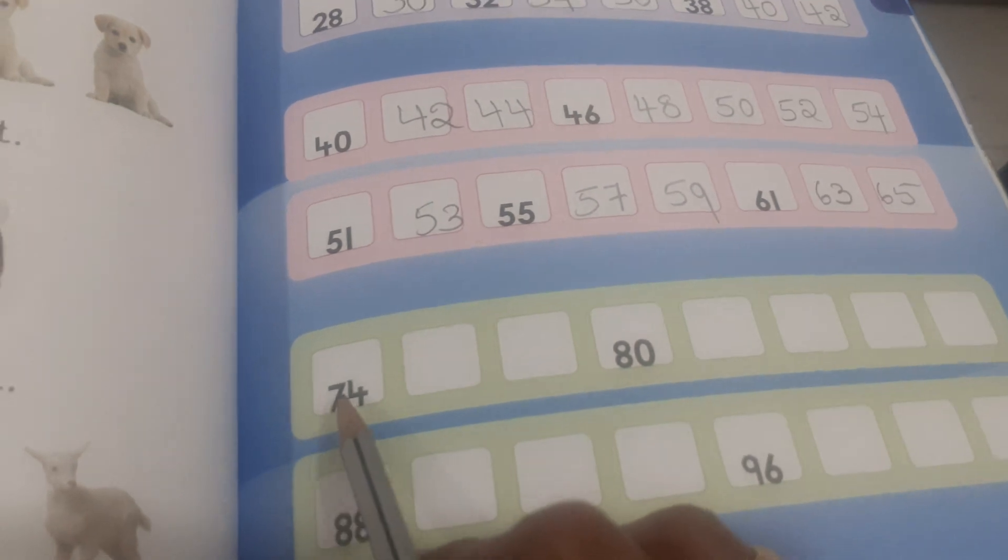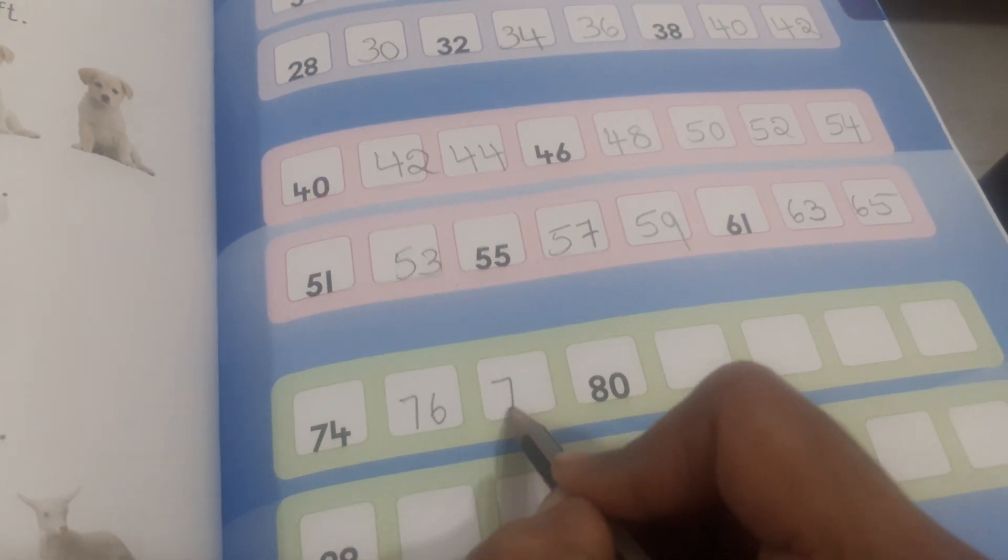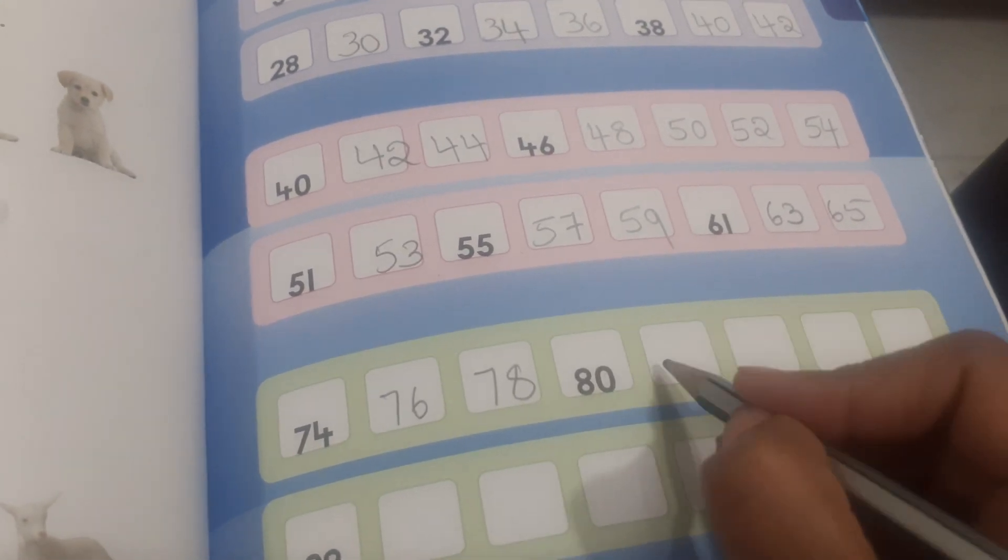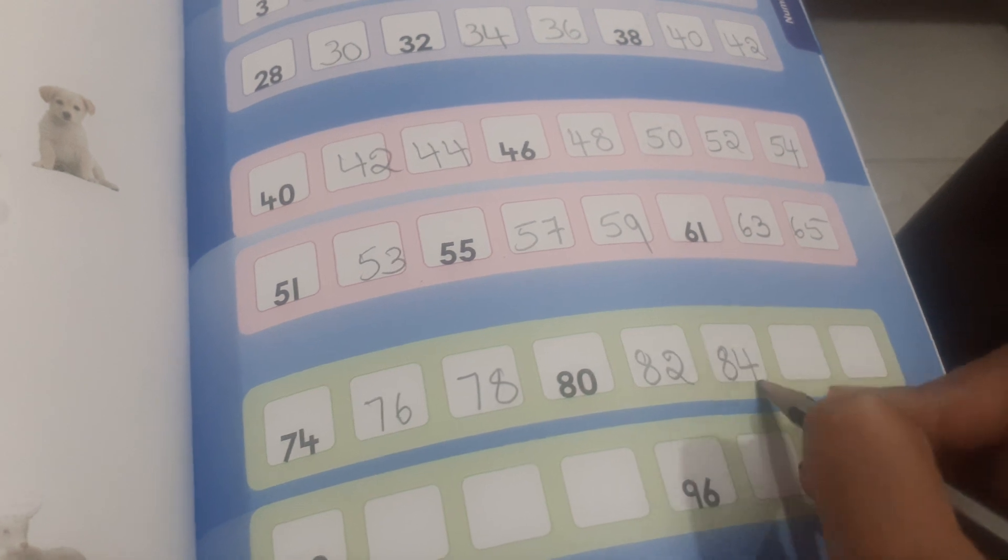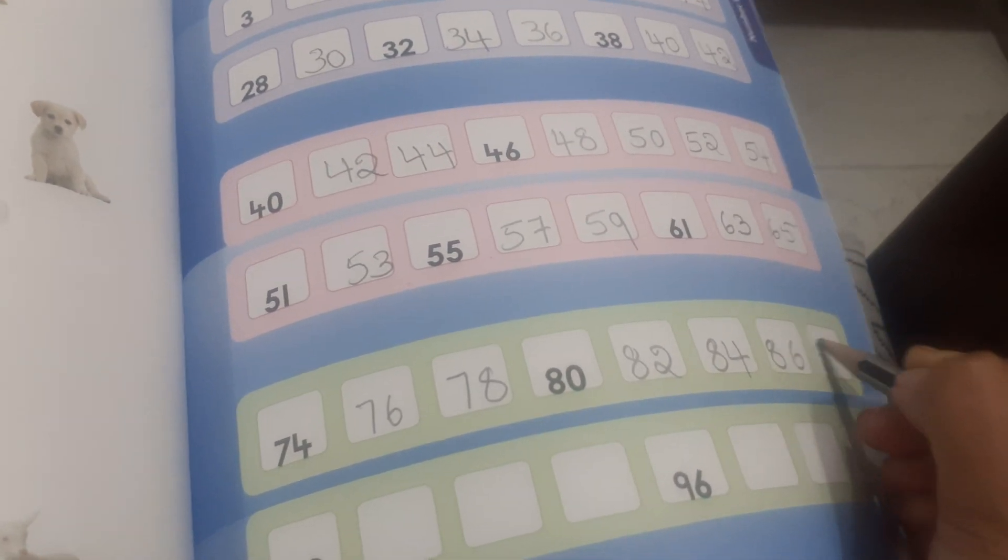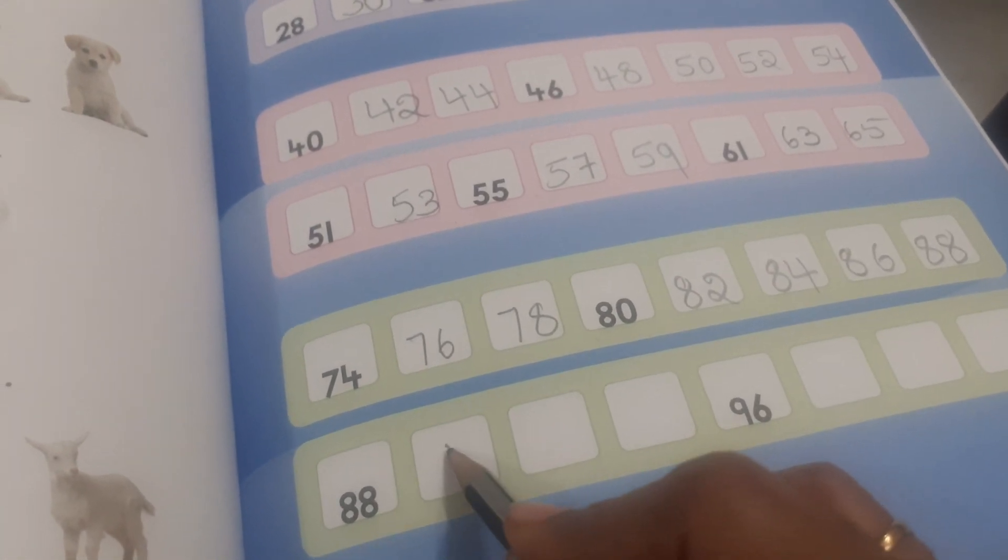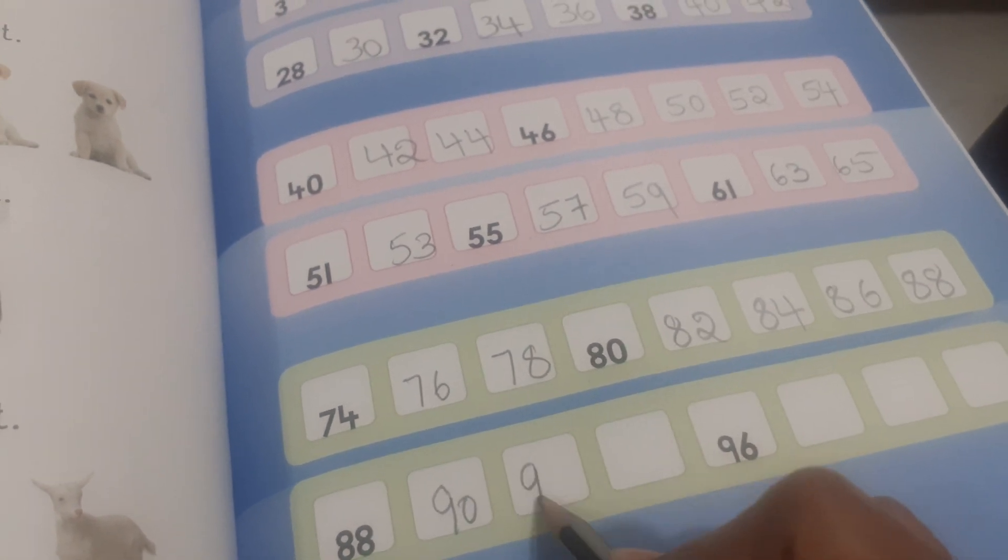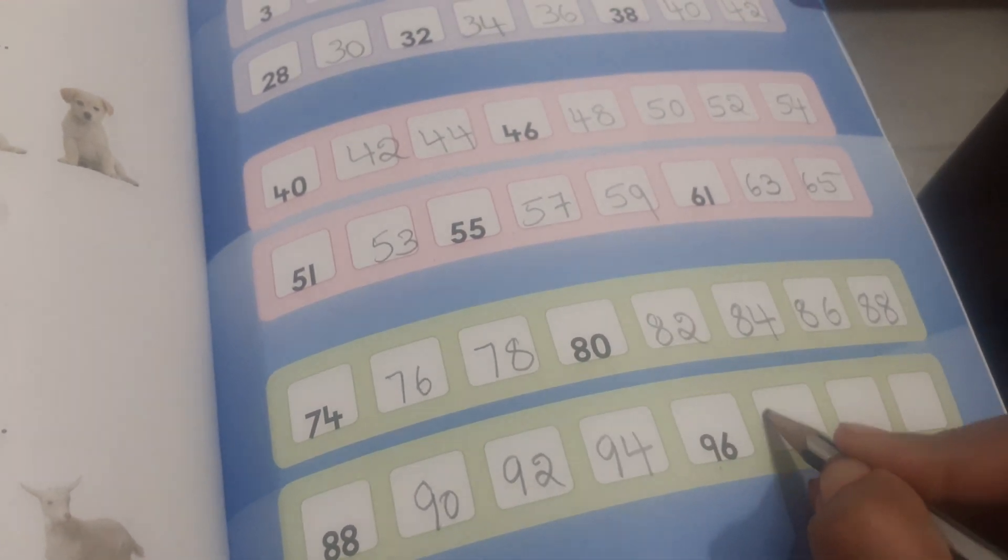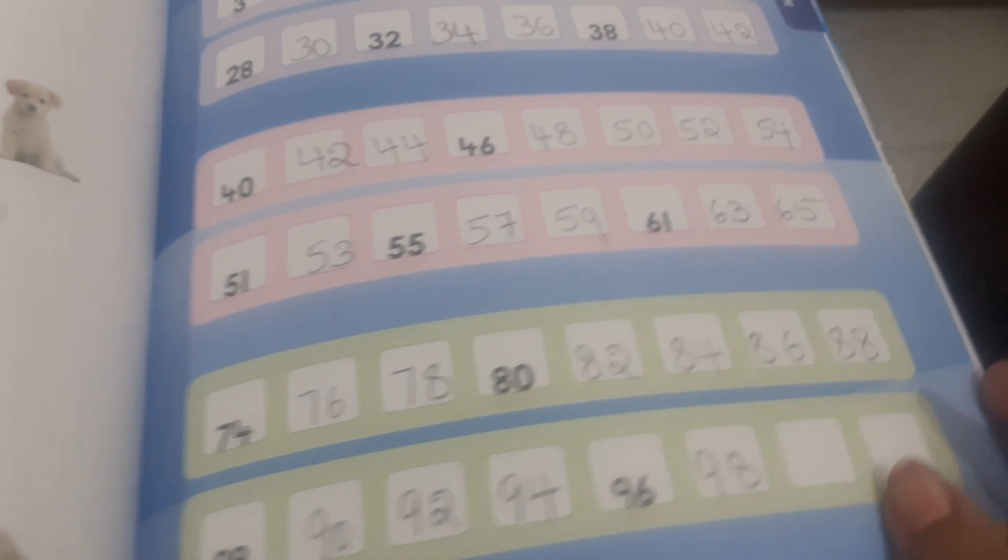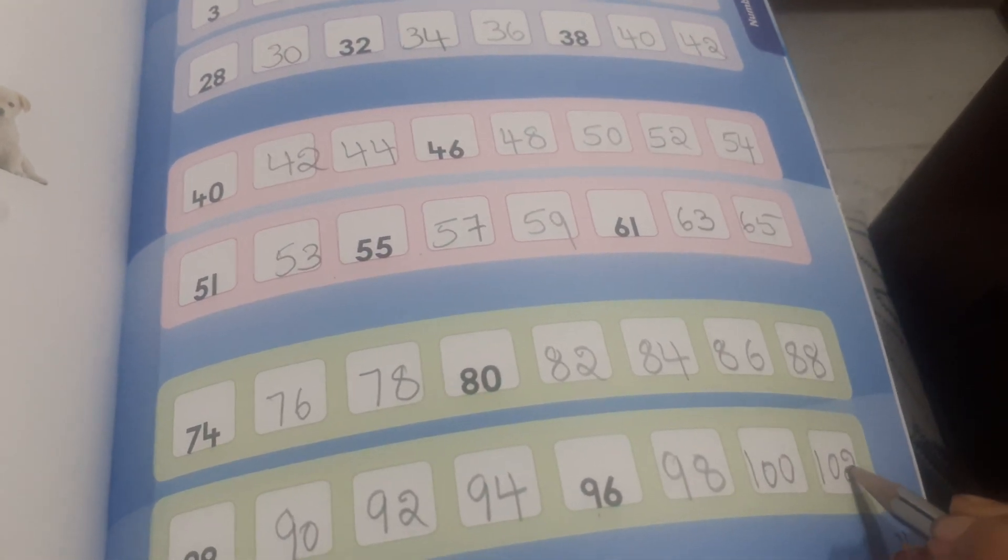Next, in third row, seventy-four is there. Leave seventy-five, right seventy-six, leave seventy-seven, right seventy-eight, leave seventy-nine, right eighty, leave eighty-one, right eighty-two, leave eighty-three, right eighty-four, leave eighty-five, right eighty-six, leave eighty-seven, right eighty-eight. Here, leave eighty-nine, right ninety-eight, leave eighty-nine, right ninety. Next ninety-two, leave ninety-three, right ninety-four, leave ninety-five, right ninety-six, leave ninety-seven, right ninety-eight, leave ninety-nine, right one hundred, leave one hundred and one, right one hundred and two.